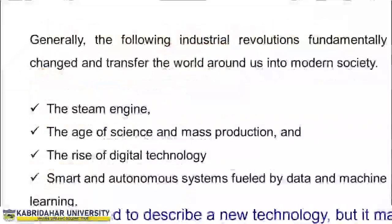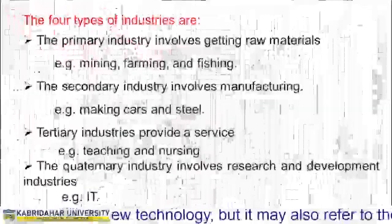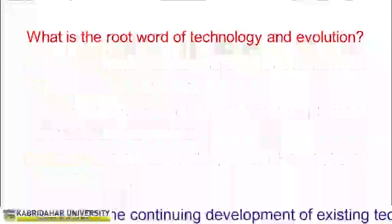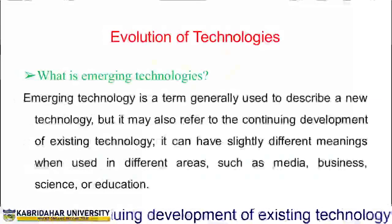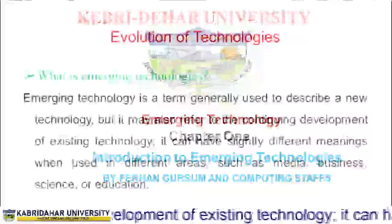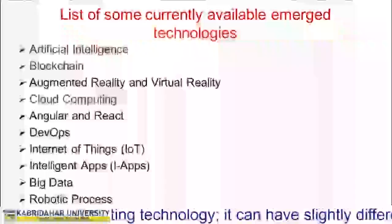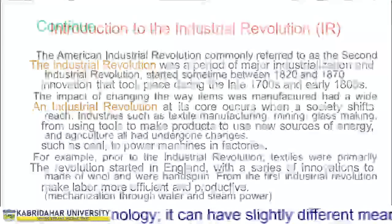Kabri-Dihar University, or KDU, is found in the eastern part of Ethiopia, in the Somali Regional State, Korahae Zone. Mission: providing quality education, training, and consultancy services to produce national and international competent graduates in different fields of study. Vision: Kabri-Dihar University aspires to be the first leading higher education institution in the country for natural resource management and utilization.